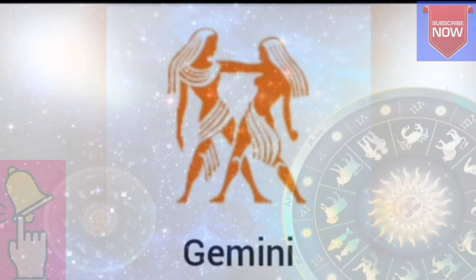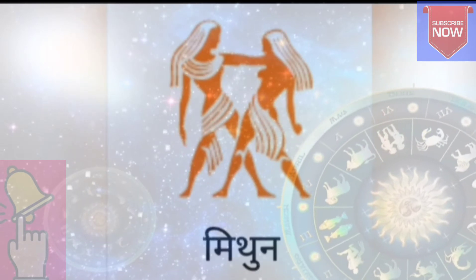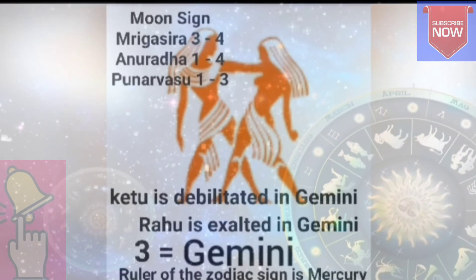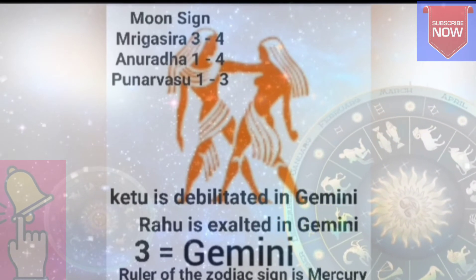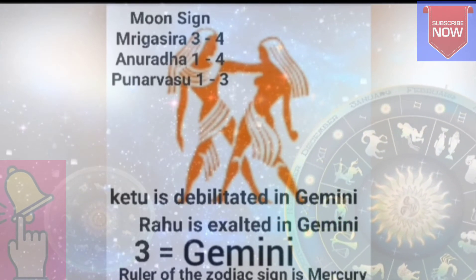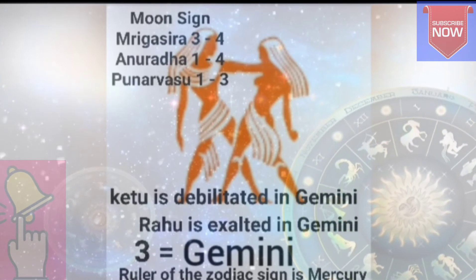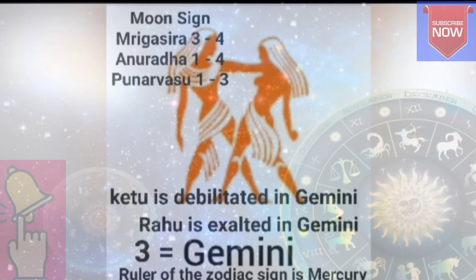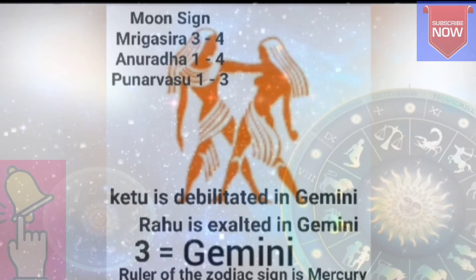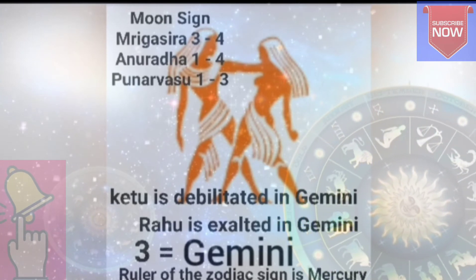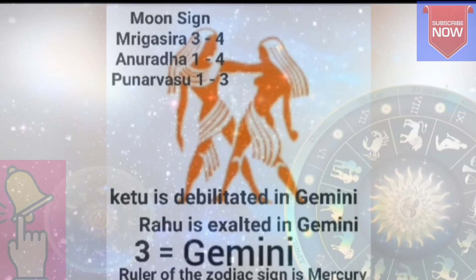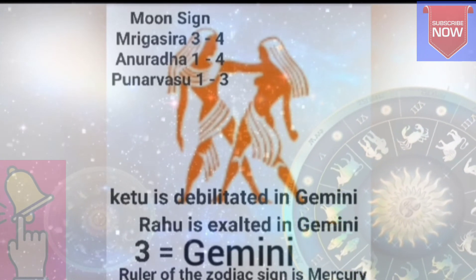Gemini, number 3, is called Mithun in Hindi. This zodiac is ruled by Mercury. Rahu is exalted in Gemini and Ketu is depleted in Gemini. This Rashi contains the nakshatras: Mrigashira 3 and 4 Pada, Ardra 1 to 4 Pada, and Punarvasu 1, 2, and 3 Padas.